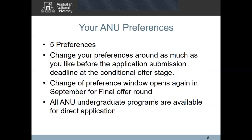Once we have developed your ANU selection rank, we will move on to assessing your ANU preferences. In your direct application you can put up to five preferences, and once you've submitted your application you can change these preferences around as much as you would like until the application submission deadline, at which point these preferences will be locked. Your entry into most courses will be assessed on the basis of your ANU selection rank, and some courses may have additional selection criteria. We recommend you go to our programs and courses webpage to find out what these additional selection criteria could be.